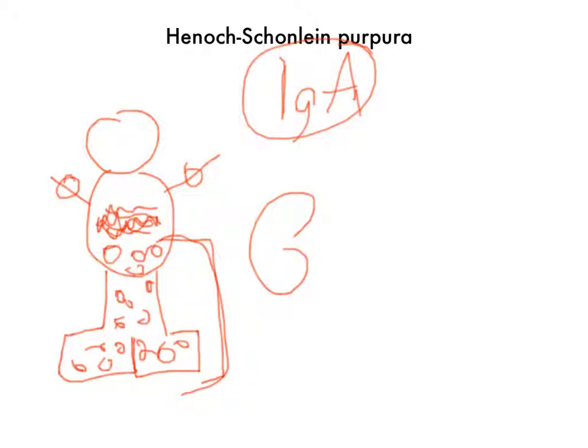In a clinical case scenario, you're going to see a kid who comes in with an upper respiratory infection — fever, chills, headache — and then he's going to have colicky abdominal pain, his joints hurt with arthralgias, and maybe you'll see some proteinuria. Basically, that's IgA deposition based off of a viral upper respiratory infection.